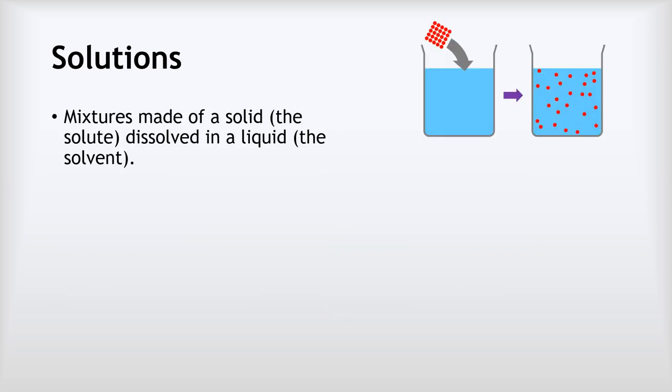We're going to start by looking at solutions, which are simple kinds of mixtures made of a solid dissolved in a liquid. The solid gets called the solute and the liquid gets called the solvent. When substances dissolve, our lump of solid separates into individual tiny particles that are spread evenly throughout the liquid.